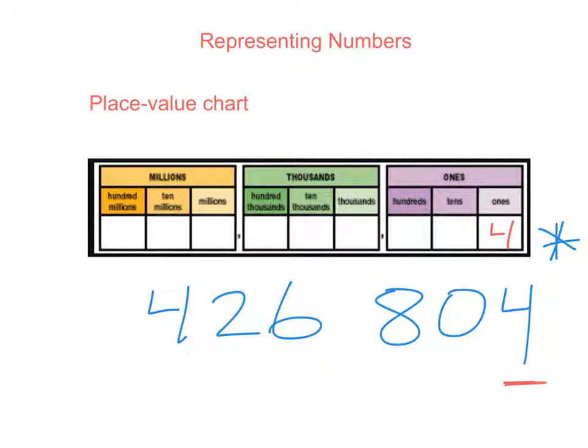So what digit is in our ones place value? A 4. And in the tens place value, we have a 0. And in the hundreds, we have an 8. And this 6 is in the thousands place value. And the 2 is in the ten thousands place value. And the 4 is in the hundred thousands place value. And there we go. We just put our number into a place value chart. Well done.